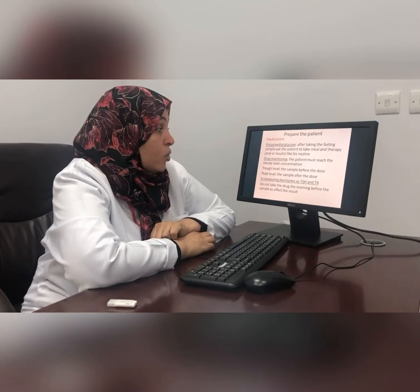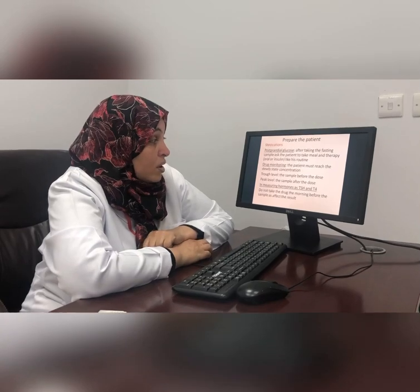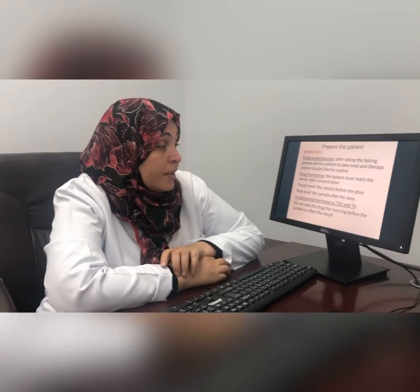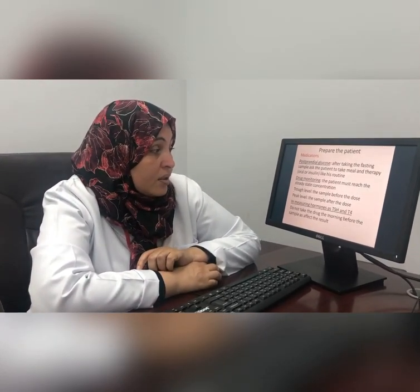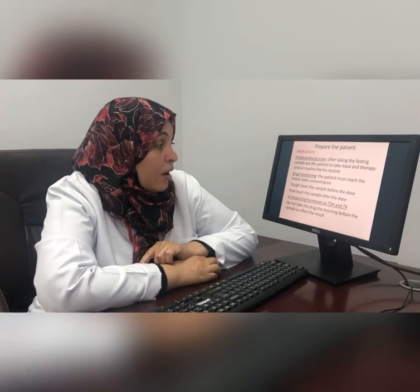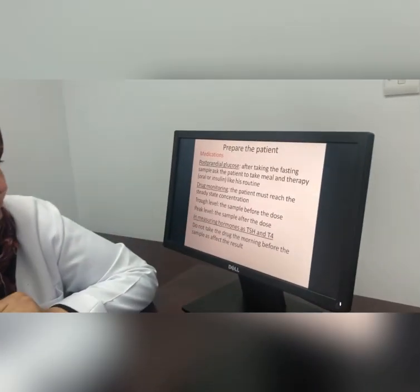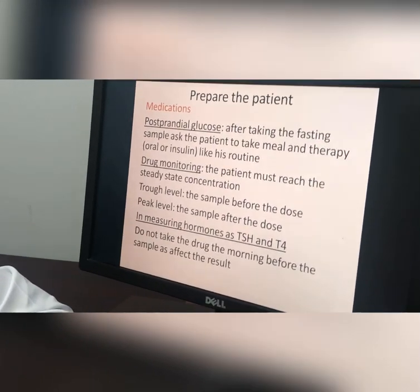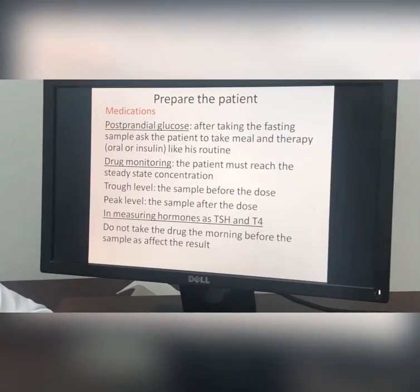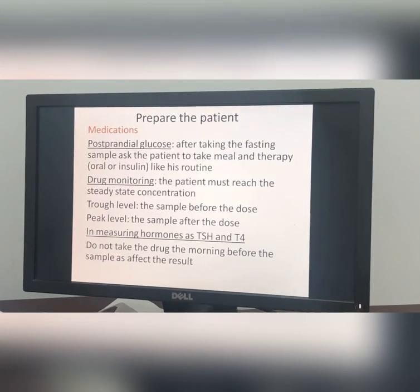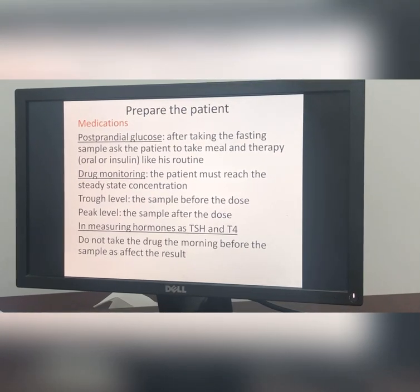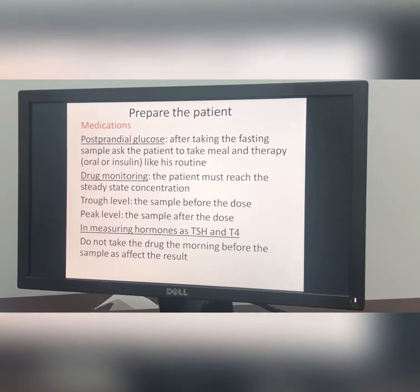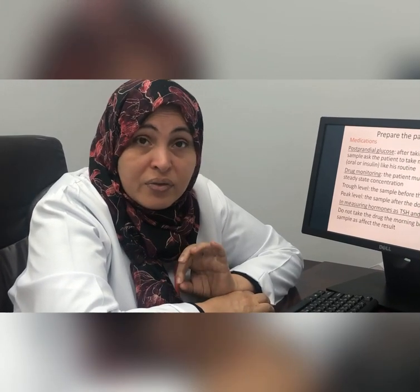In the case of drug monitoring, the patient needs to reach steady-state concentration. For antibiotics, they may need more than three samples. For drugs, we can measure both the trough level and the peak level. The trough level is the sample taken before the dose — it gives us an idea about the steady-state concentration and whether the drug is reaching an effective concentration. The peak level is the sample taken just after the dose and tells us about toxicity.